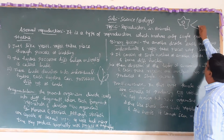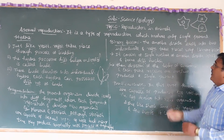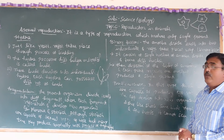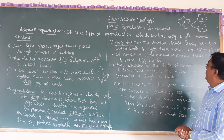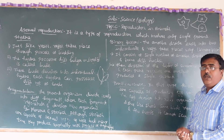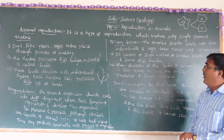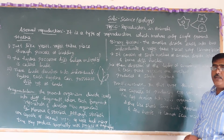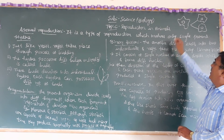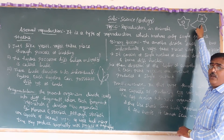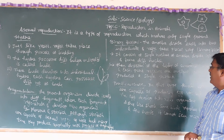In binary fission, one single amoeba cell divides into two individuals. From two it becomes four, four becomes eight, and so on — dividing continuously. The single nucleus of the amoeba first divides into two different nuclei, then the body divides, with each part receiving one nucleus.